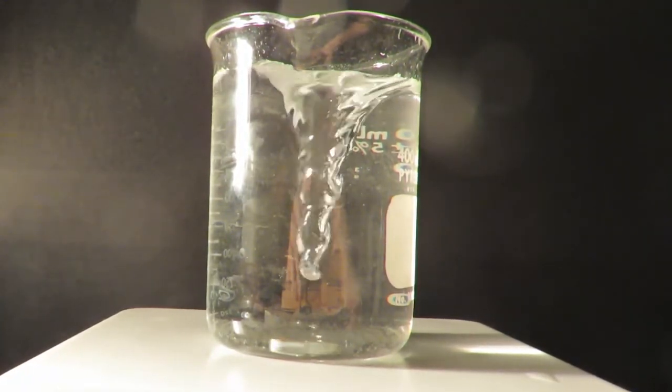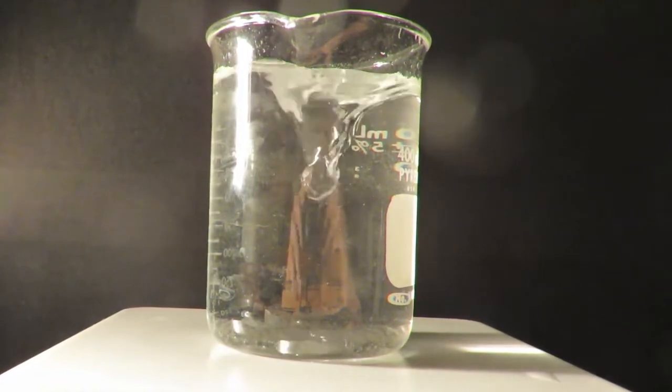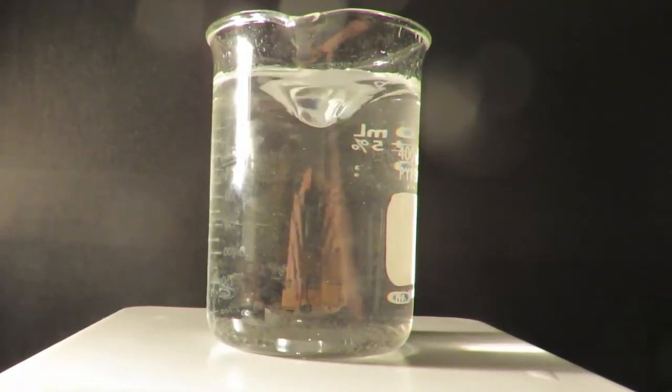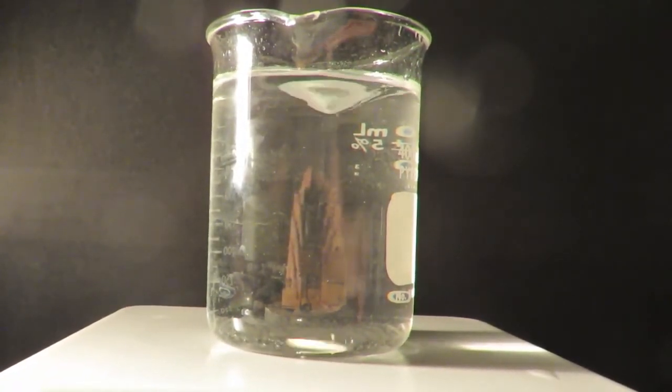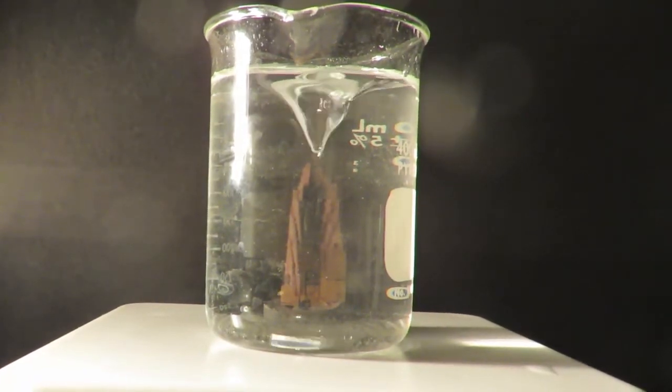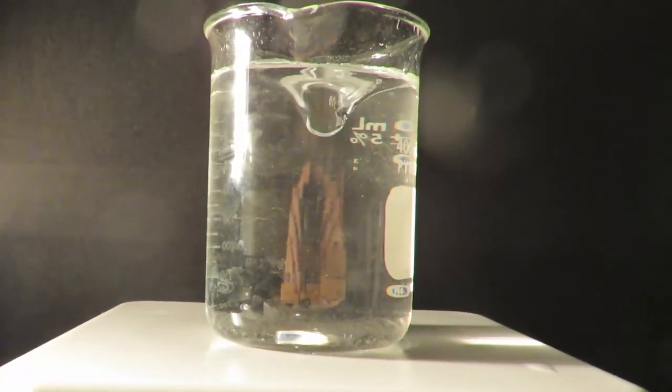And then when that funnel gets down there far enough, the paper clip is just disrupted and starts to kind of spin around. So I turn the speed back down and you can see you can use a paper clip as a magnetic stir bar in a pinch.